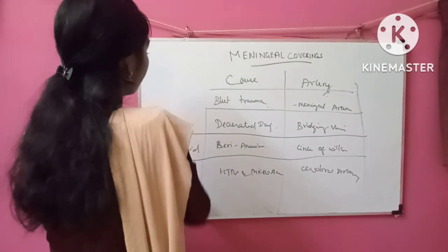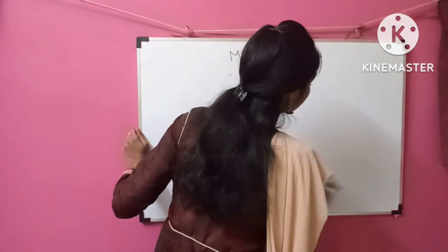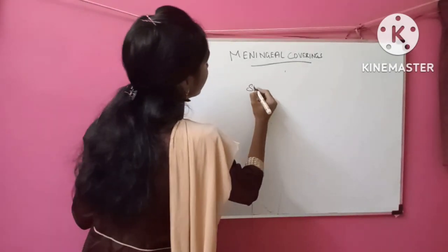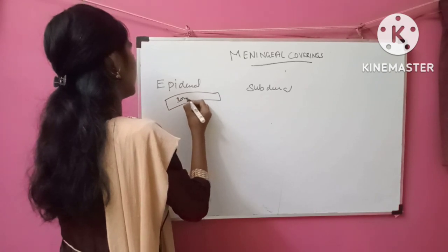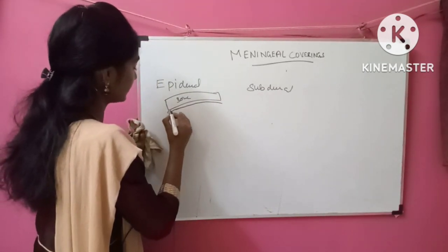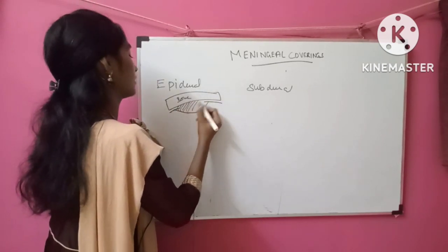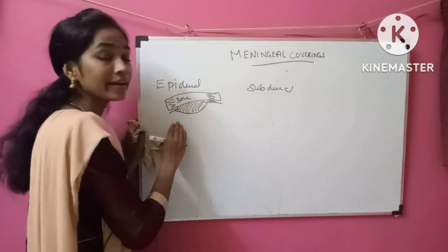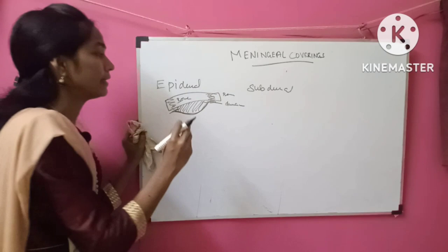What is the difference between epidural and subdural, and how can we find it on CT? In radiology we must know this difference. For example, this is our bone tissue, and this is the dura mater closely attached with the bone tissue. If the meningeal artery ruptures, there is bleeding. The bleeding cannot exceed the suture in the bones because the dura mater is closely attached with the bone tissue. So the bleeding looks like a biconvex lens shape on CT scans.